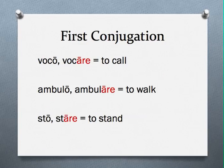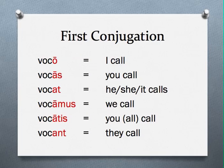First conjugation verbs can be identified by the last letters of their infinitive. Infinitives that end in a long -ARE, such as vocare, ambulare, and stare, are all first conjugation verbs. These verbs are conjugated in the following way. Note how the third singular and the third plural are both short A's.